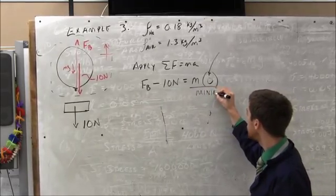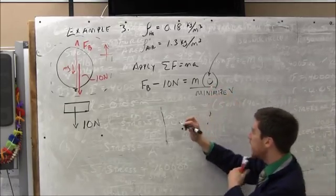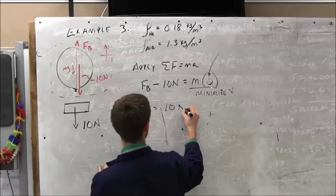We're optimizing. We're actually minimizing the volume here. So I'll make a note of that. We want to minimize V. So this is the minimal case. And so therefore, the buoyant force will be equal to 10 newtons.